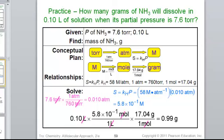mole times molar mass pulls out grams. So, the volume of 0.1 liter times the molar mass of 17 gives the answer: 0.99 grams of ammonia.